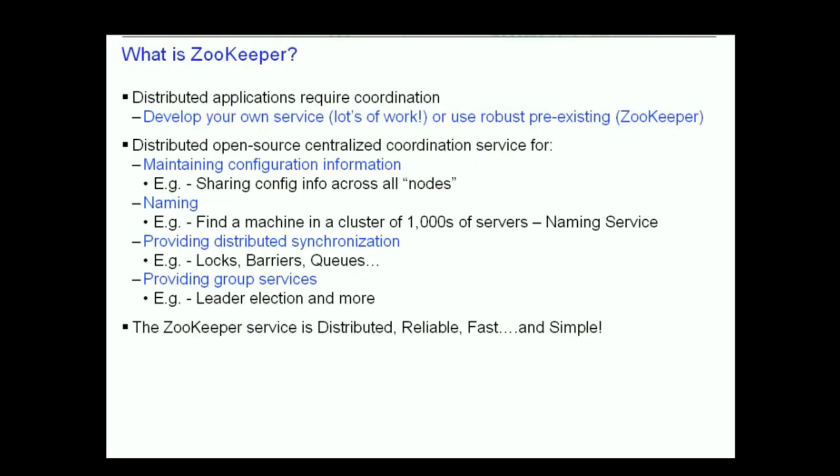Distributed applications require coordination. You could develop your own coordination service; however, that can take a lot of work and it's not a trivial task. The alternative is using a robust coordination service that is already available for use. ZooKeeper is just that — a distributed centralized coordination service that is open source and ready for use.